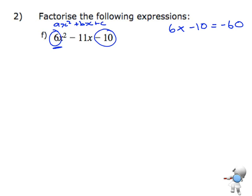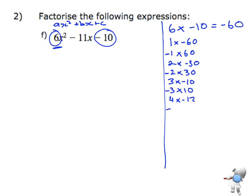Now I want to think about all the different multiples of negative 60. So I could do 1 times negative 60, or negative 1 times positive 60. I could do 2 times negative 30, or negative 2 times positive 30. I could do 3 times negative 10, or negative 3 times positive 10. I could do 4 times negative 12, or negative 4 times positive 12. 5, I could do 5 times...